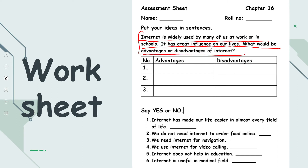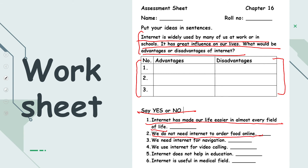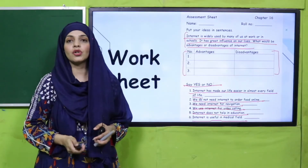What would be the advantages or disadvantages of the internet? You need to write some advantages and some disadvantages. Say yes or no: Has the internet made life easier in almost every field? Yes. We do not need internet to order online food — No, we do need it. Internet for navigation — Yes. Internet for video calling — Yes. Internet does not help in education — No, it does. Internet is useful in the medical field — Yes. Pause the video and complete the worksheet.